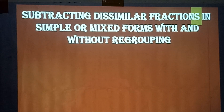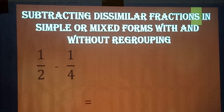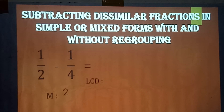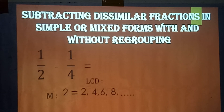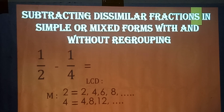One-half minus one-fourth equals — let's get the LCD by finding the multiples of 2 and 4. The multiples of 2 are 2, 4, 6, 8, and so on. For 4 we have 4, 8, 12, and so on. Two and four meet at 4, so the least common multiple of 2 and 4 is 4.